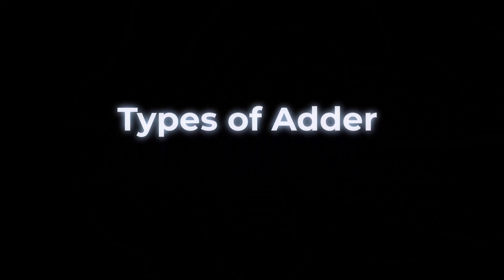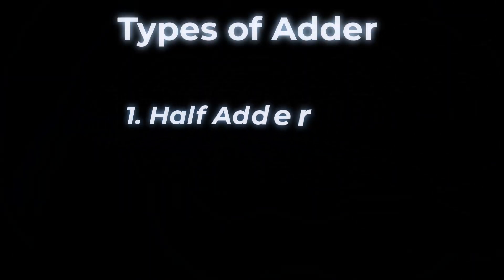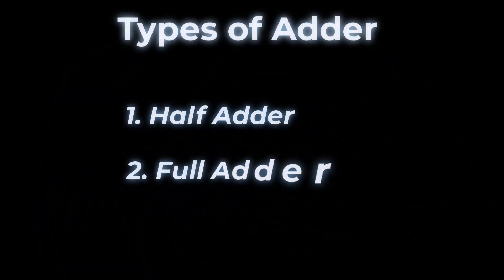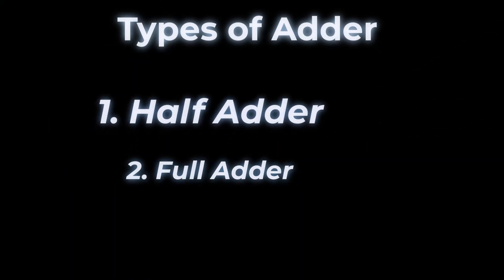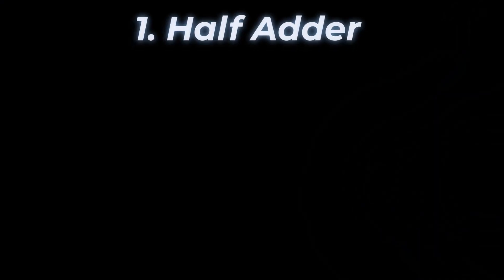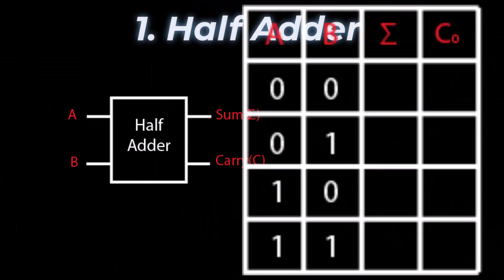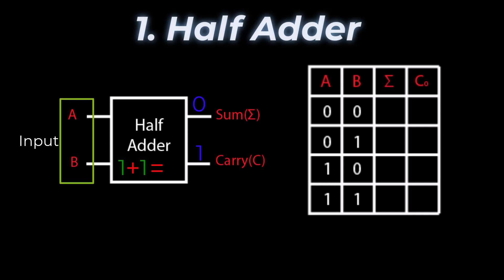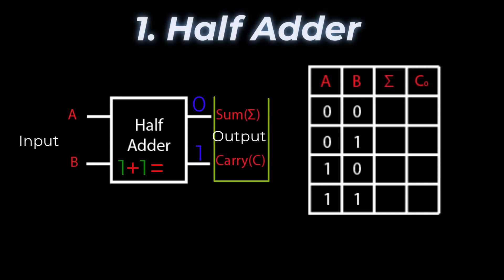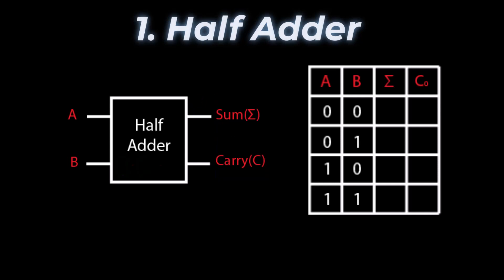There are two types of adder circuits: half adder and full adder. A half adder is a digital circuit that adds two binary digits together. It has two inputs called A and B, and two outputs called sum and carry. Let's make a truth table for these two inputs.